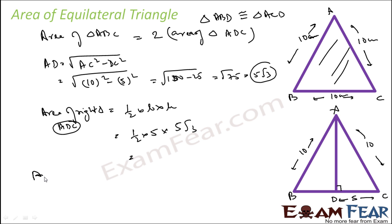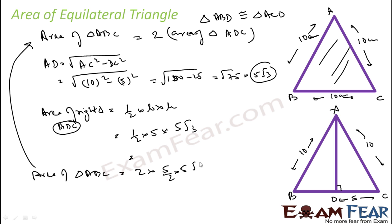Now using the formula, the area of triangle ABC is nothing but twice the area of triangle ADC, and the area of ADC came out to be 5/2 into 5√3. The 2 and 2 cancel, so what you get is 25√3. Since it was in centimetres, it will be centimetre square. So using the area of a right triangle, we could actually find the area of the equilateral triangle.